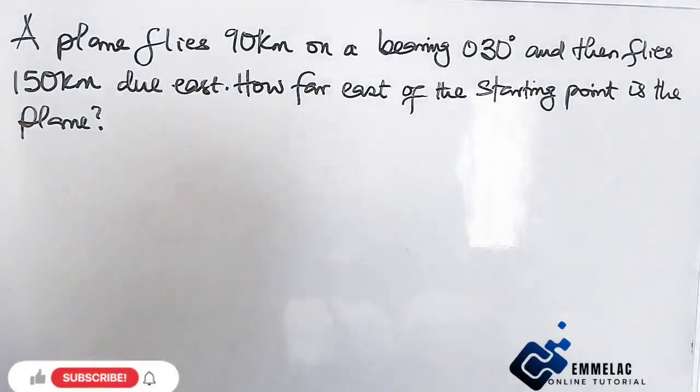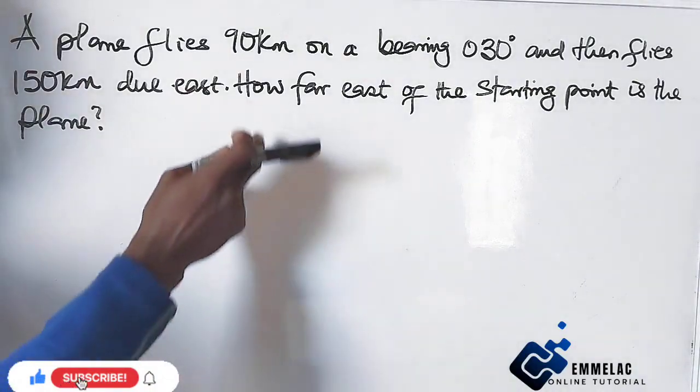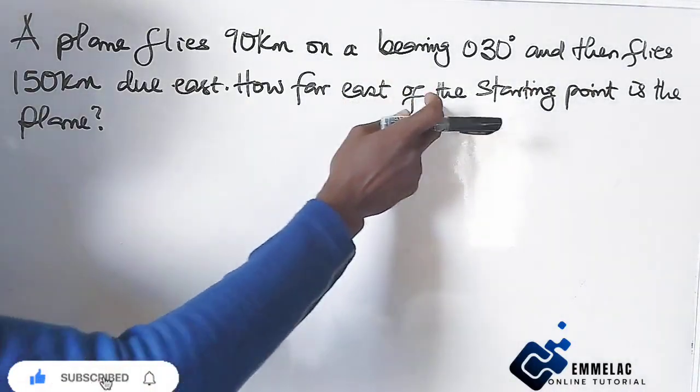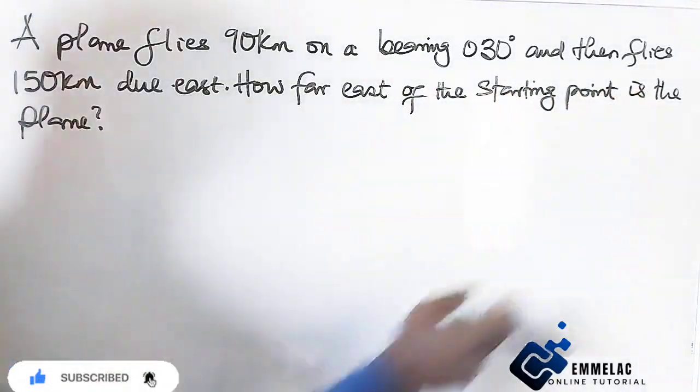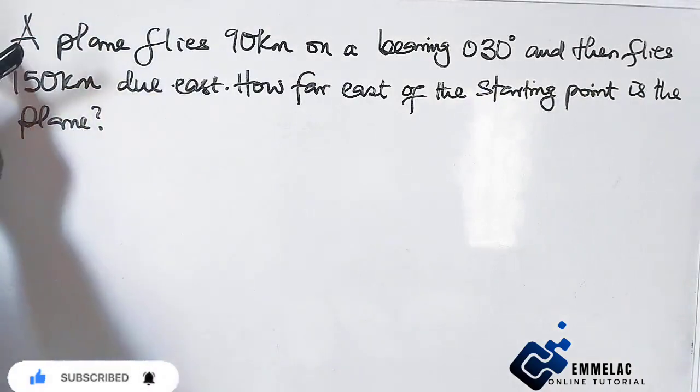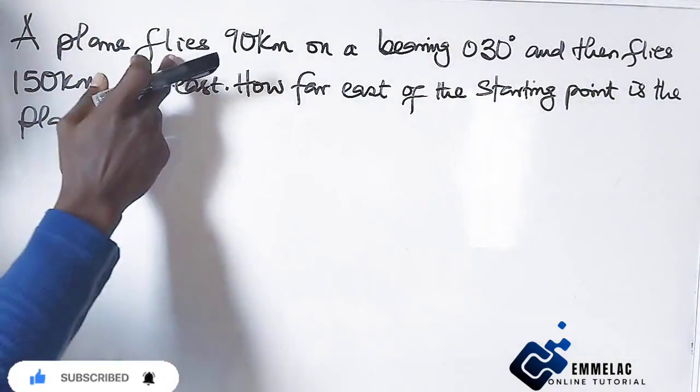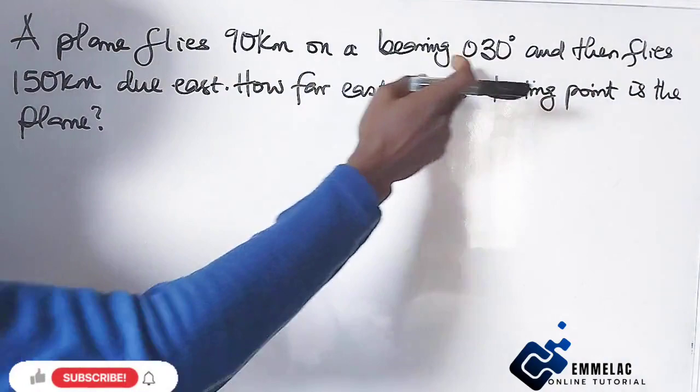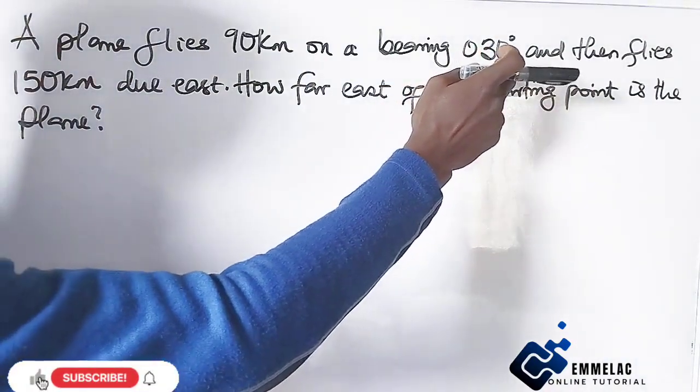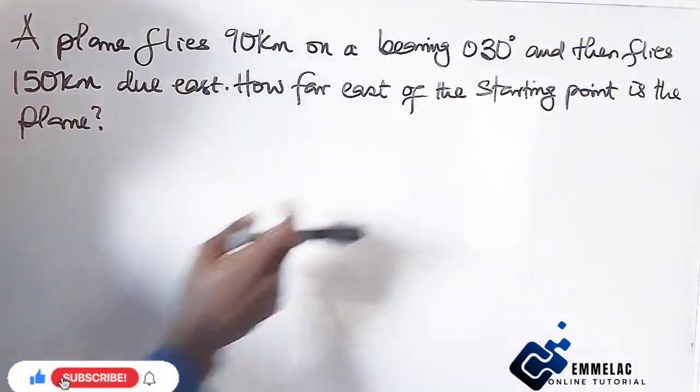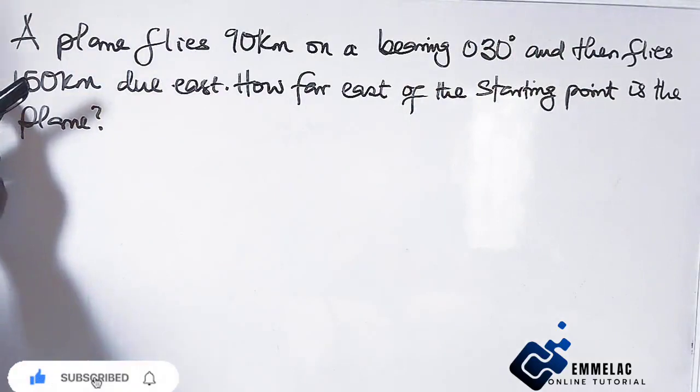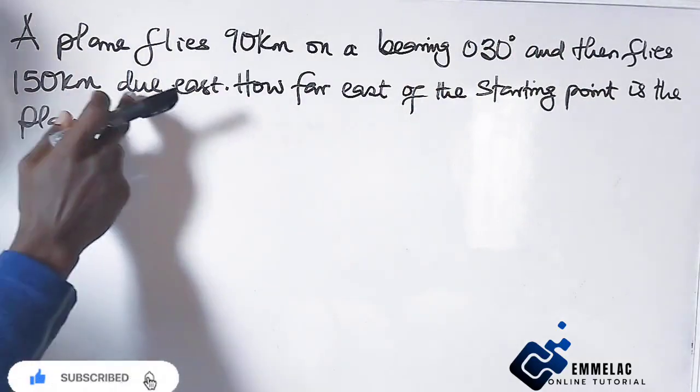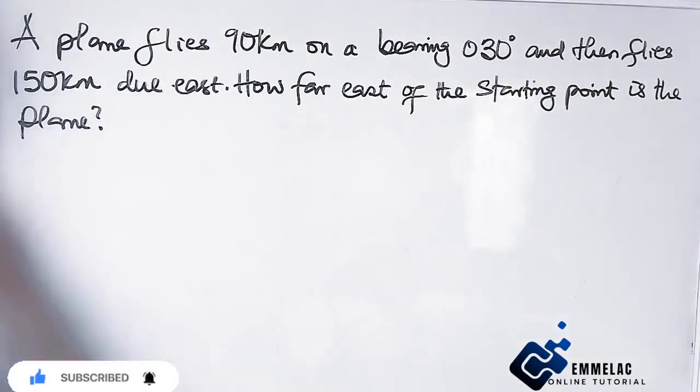Welcome to Emelak Online Tutorial. Before us is this question: how far east of the starting point is the plane? A plane flies 90 km on a bearing of 030 degrees and then flies 150 km due east.